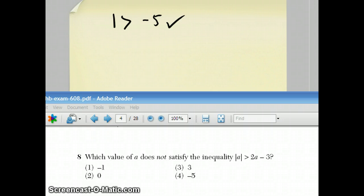If you try choice 2 and you plug in 0, you would get 0 is greater than negative 3, which is also true. If you plug 3 in, you get 3 is greater than 2 times 3 is 3, which is 6 minus 3 is 3. And that is close, but not true. And finally, the only choice left is choice 5. It's choice 4, which is negative 5. It would become regular 5. 2 times negative 5 is negative 10. Negative 10 minus 3 is negative 13. And that's the only one that's not satisfied. So that's your answer.